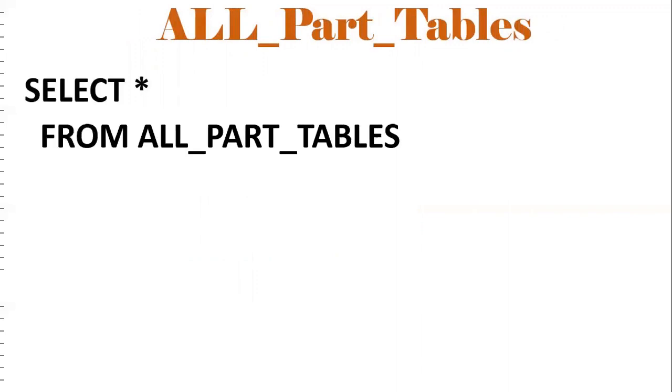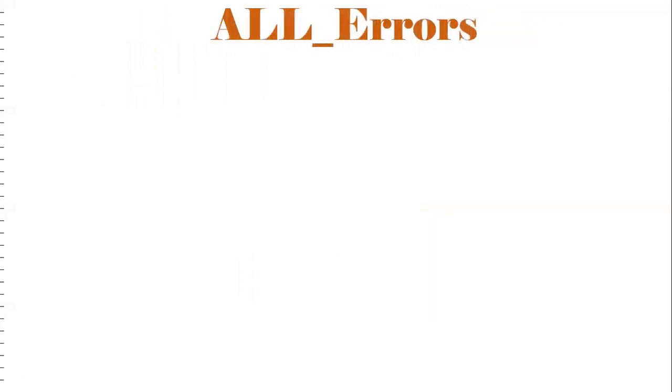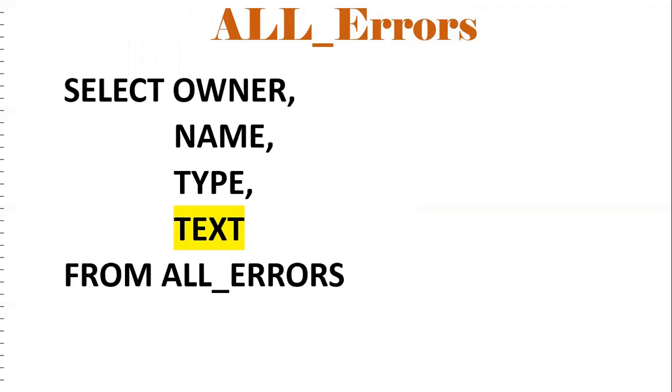ALL_PART_TABLES gives partition information — what partitions are available on a particular table. ALL_ERRORS is very important: it gives owner, object name, type, and text from ALL_ERRORS. If you want to know what errors exist in a particular procedure, query ALL_ERRORS WHERE NAME = '<object_name>'.